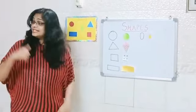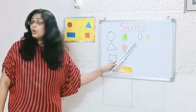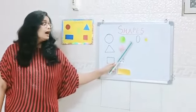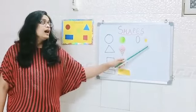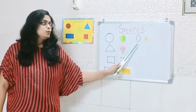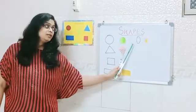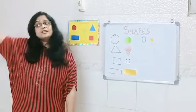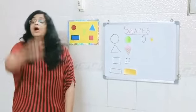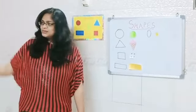So let's sing it. I am an oval. I am an oval. We are an oval. We are an oval. We also go round and round.